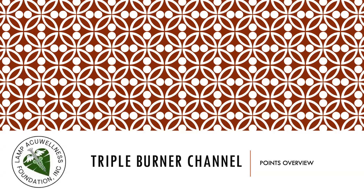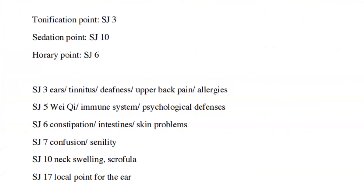Let's go to the points overview for the Triple Burner channel. The tonification point is Sanjiao 3, the sedation point is Sanjiao 10, and the Ferrari point is Sanjiao 6. Sanjiao 3 is used for ear problems, tinnitus, deafness, upper back pain, and allergies. Sanjiao 5 is very good for strengthening the Wei Qi immune system and for psychological defenses. Sanjiao 6 is good for constipation, intestinal issues, and skin problems. Sanjiao 7 is for confusion and senility. Sanjiao 10 for neck swelling and scrofula. Sanjiao 17 is a local point for the ear.